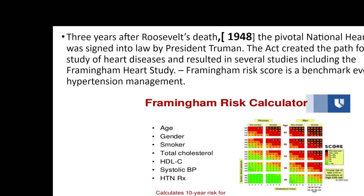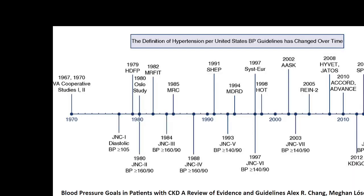As far as normal blood pressure is concerned, there is again some confusion and evolution — the concepts have changed from time to time. The first universal guideline to fix normal blood pressure was in 1967 or 1970, and from then different committees gave guidelines. Initially, the threshold was 160 by 90 as normal; now in 2017, normal blood pressure is considered to be 130 by 80. What is normal and what is abnormal is all based upon statistical analysis.